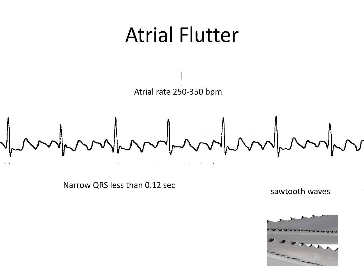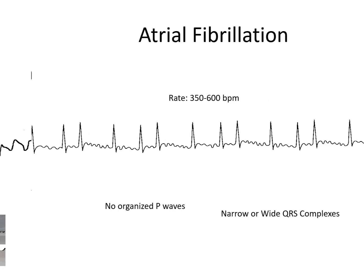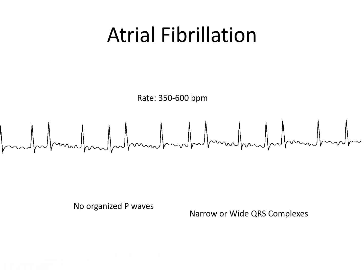Atrial flutter: atrial rate is 250 to 350 beats per minute, with sawtooth waves and narrow QRS complexes. Atrial fibrillation: atrial rate is 350 to 600 beats per minute, no organized P waves, narrow or wide QRS complexes.